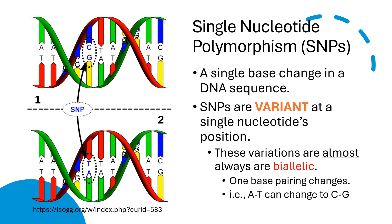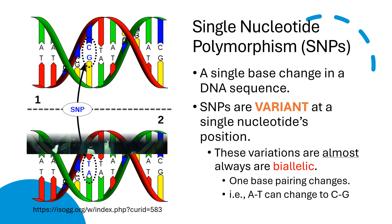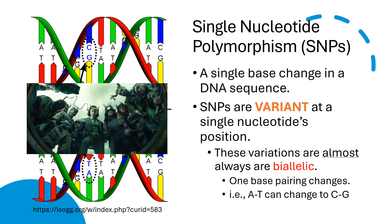The first type, SNPs or single nucleotide polymorphisms, are a single base change in a DNA sequence — think of it like a typo in a very long book where one letter is changed. These SNPs are variants at a single nucleotide's position. I like to think of it like the Loki series, where Loki has different variants of himself — our DNA can have different variants at specific positions. Most of the time these variations are biallelic, meaning they come in two different forms. For example, the base pair AT, adenine and thymine, might change to CG, cytosine and guanine. SNPs are tiny changes in our DNA, but they can have a big impact on how our genes work and how we function.